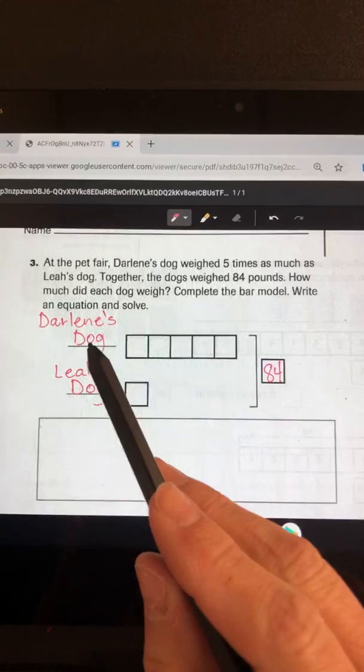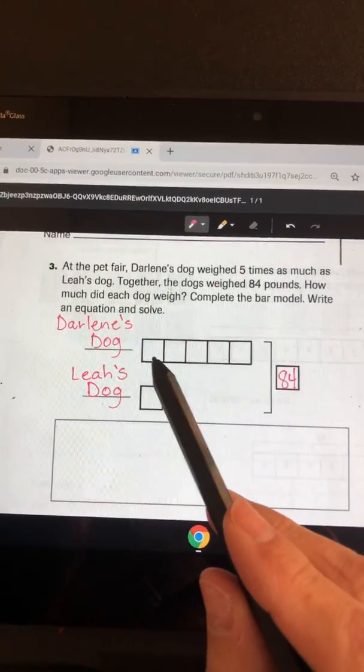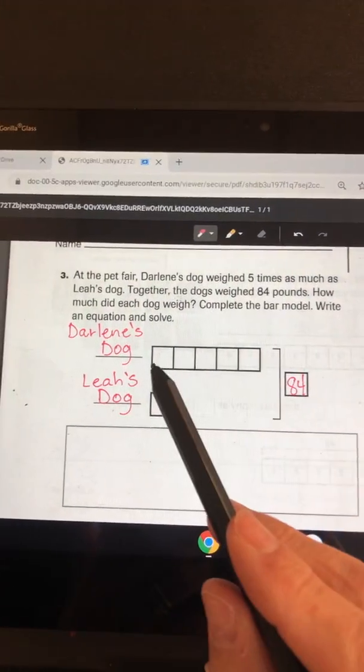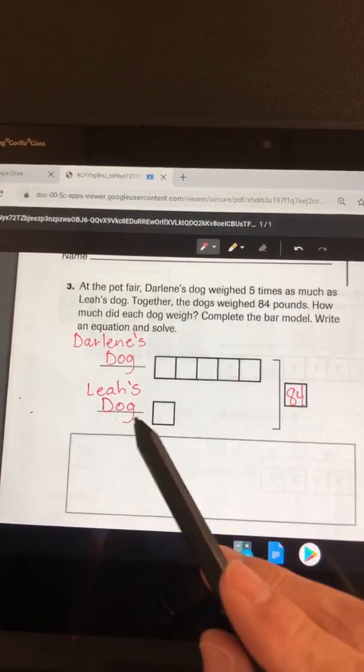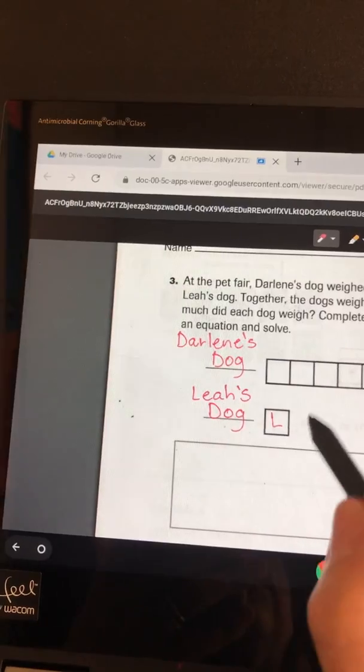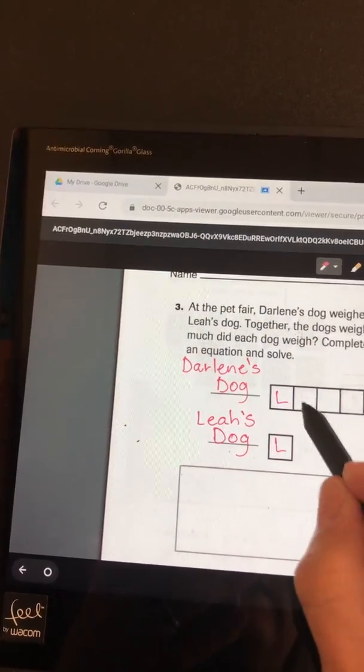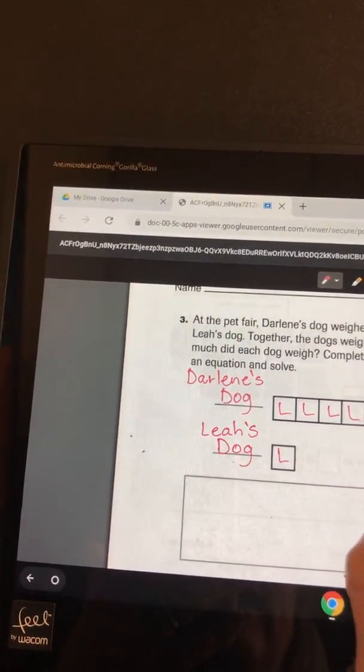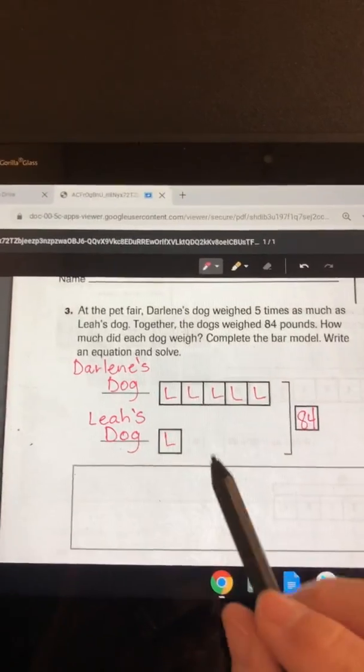So each one of these squares represents the weight of Leah's dog, and Darlene's is five times the size of Leah's. Together they equal 84 pounds.